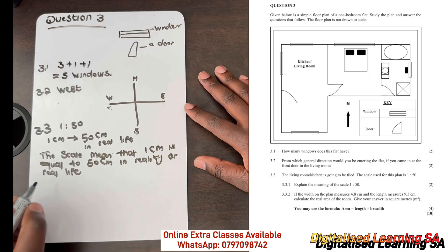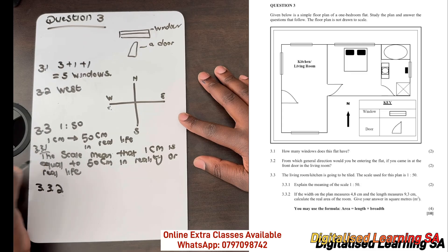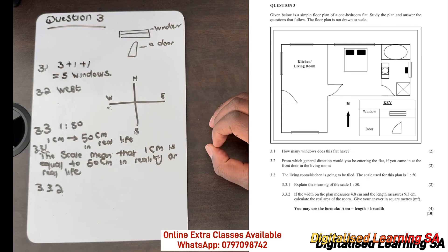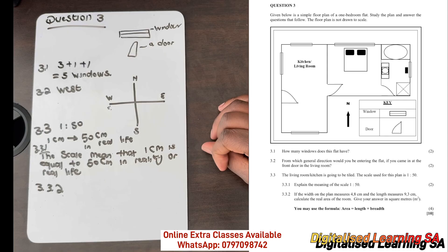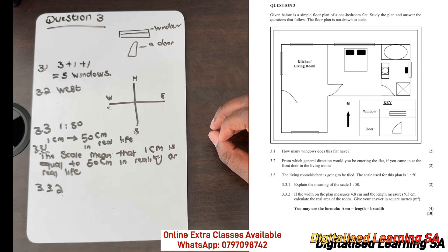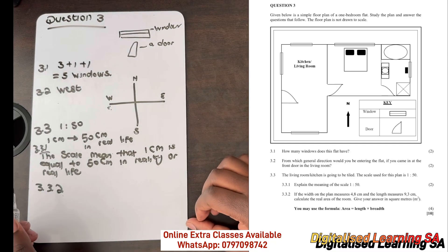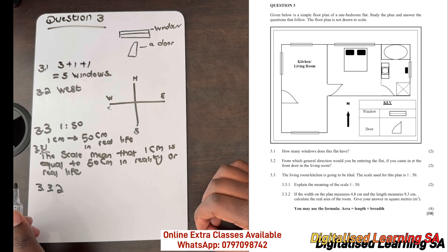Now let's move to question 3.3.2. This question says: if the width of the plan measures 4.8 centimeters and the length measures 9.3 centimeters, calculate the real area of the room. The word 'real' means in reality, and we are told to give our answers in meters squared. First, let's convert our width and length into meters.